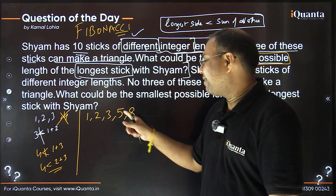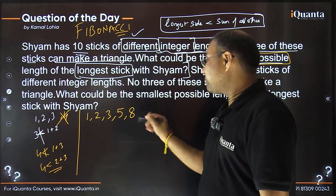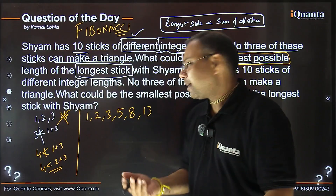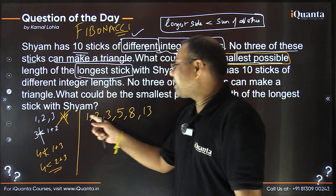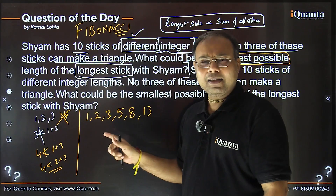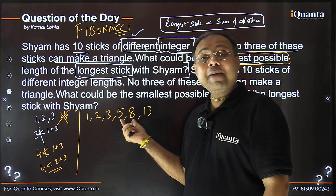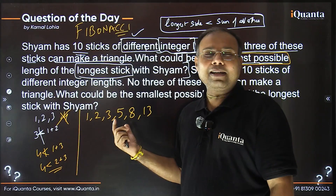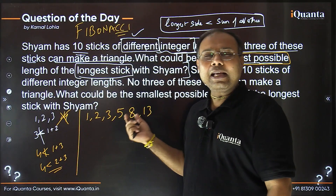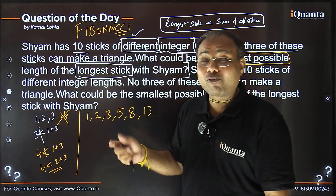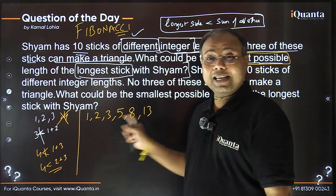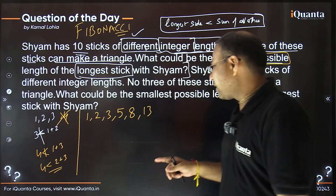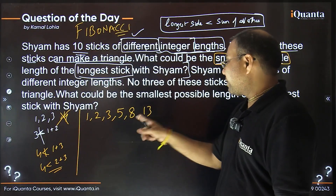Every term is the sum of the previous two numbers — that's the Fibonacci sequence. Starting with 1, 2: then 1 + 2 = 3, then 2 + 3 = 5, then 3 + 5 = 8, then 5 + 8 = 13. At 13, the limiting case is that 13 equals 5 + 8 — not smaller, so no triangle is formed. This is the best case we can achieve.